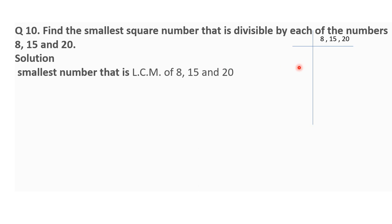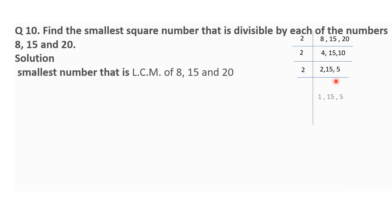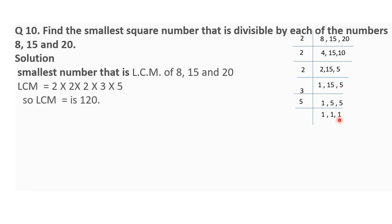We find the LCM of 8, 15, and 20. Dividing by 2: we get 4, 15, and 10. Again dividing by 2: we get 2, 15, and 5. Again by 2: we get 1, 15, and 5 — but 15 and 5 are not divisible by 2. Then dividing by 3: 3 fives are 15, giving 1, 5, 5. Then dividing by 5: 5 ones are 5, giving 1, 1, 1. So LCM = 2 × 2 × 2 × 3 × 5 = 120.